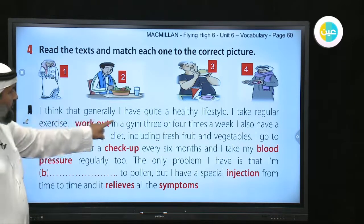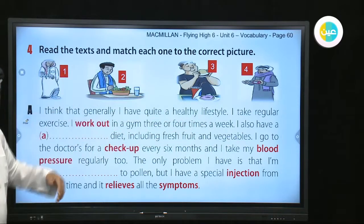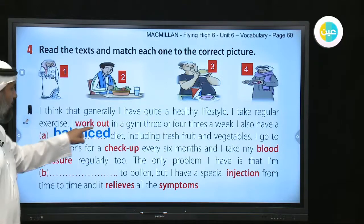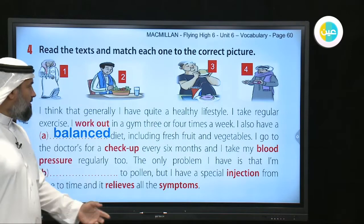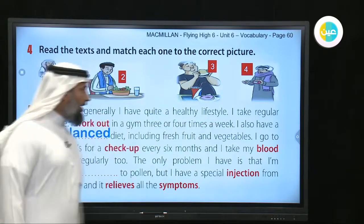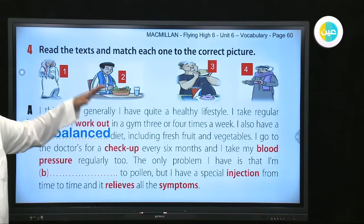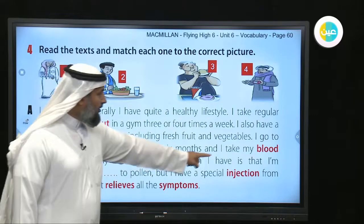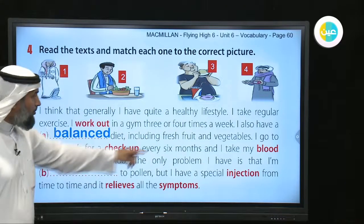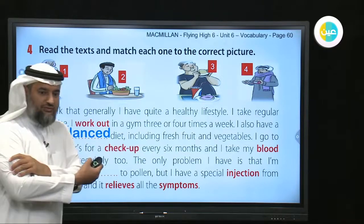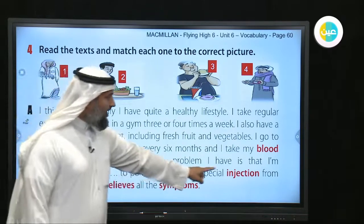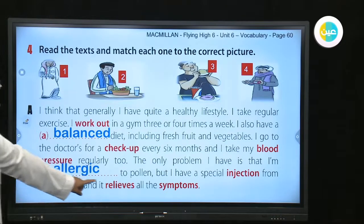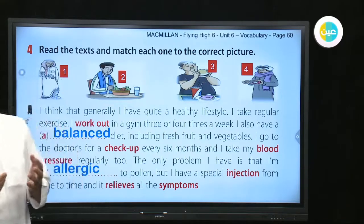Paragraph A: 'I think that generally I have quite a healthy lifestyle.' Which picture has a healthy lifestyle? It's number two. 'I work out in a gym three or four times a week. I also have a balanced diet.' He gets a check-up every six months and monitors his blood pressure. The only problem is that he has an allergy — an allergy to pollen.